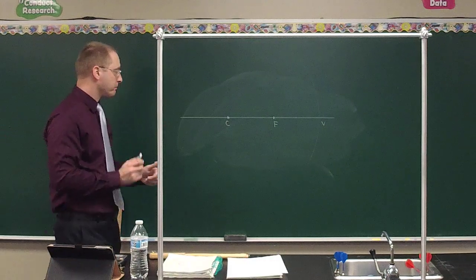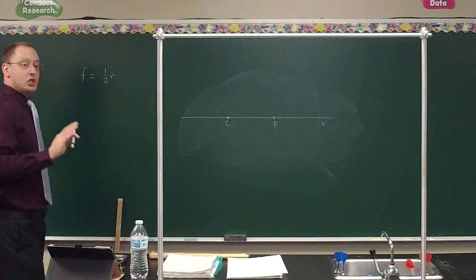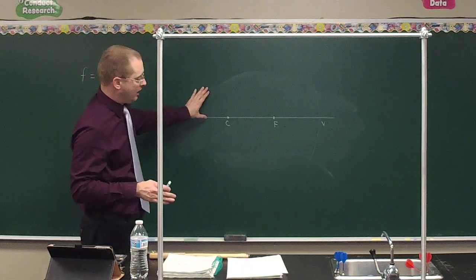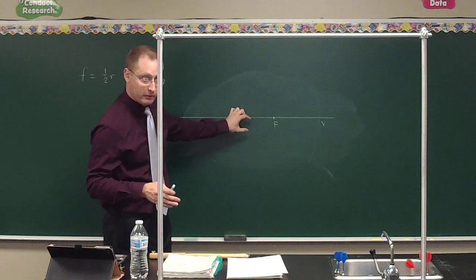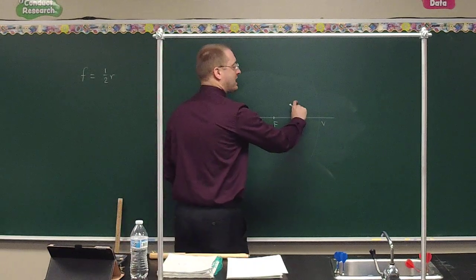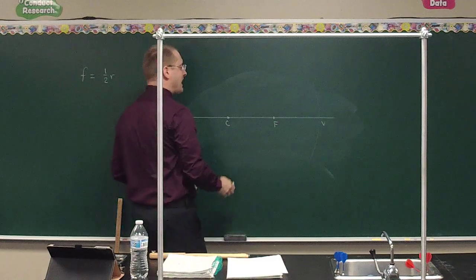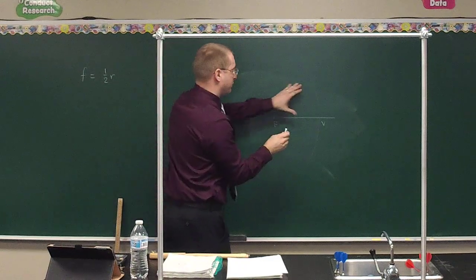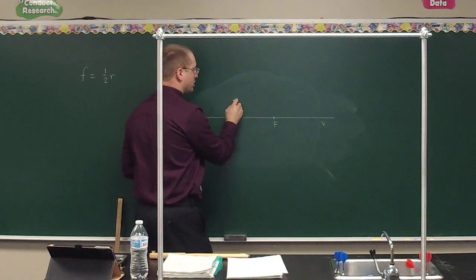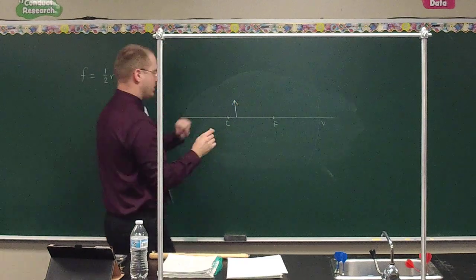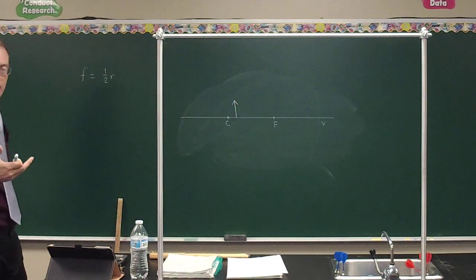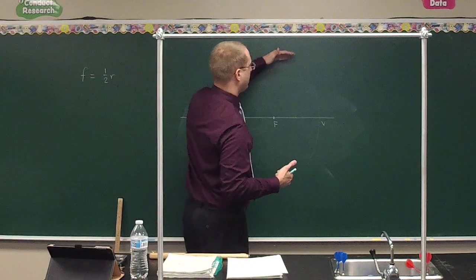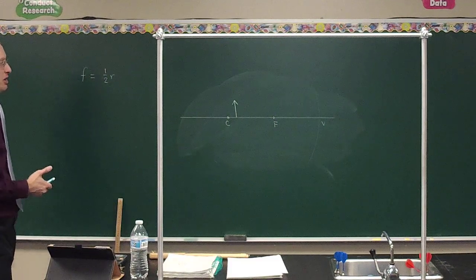Yesterday at the end of the hour we put an object back beyond C and got a small image that converged in front. Now let's put an object just a little in front of the center of curvature. Draw an arrow — don't make it too tall — just a little in front of C, but make sure it stays below the height of the mirror.